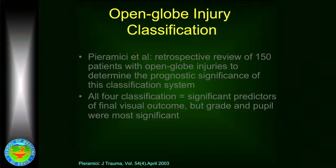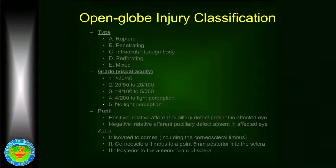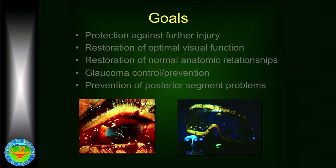The most important predictors were the grade and the pupil. So what's very important is that when you first evaluate a patient with anterior segment or corneal trauma, you need to go back and look at these prognostic factors: the type, the grade, the pupil, and particularly the level of vision at the beginning and the presence or absence of an afferent pupillary defect. With those two factors you can get a very good determination of how well the patient is going to do.